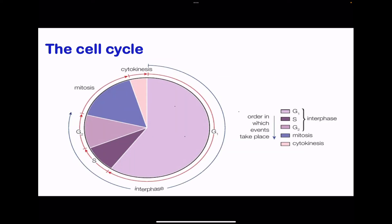The cell cycle is broken down into interphase, mitosis, and cytokinesis. Interphase is divided into three phases: G1, S, and G2. During G1, the cell takes up material, grows and increases in size. In S phase, the chromosomes replicate in order to produce enough genetic material to be shared between two cells. In G2, the organelles and other cell materials needed for cell division are synthesized.